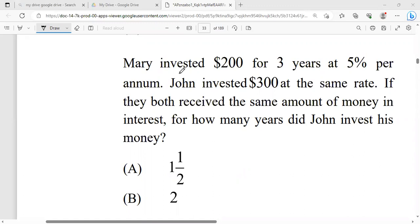So let's break it down. We're going to focus on Mary because we have all the information on Mary. Let's calculate the simple interest that Mary receives because they did say that she and John received the same amount of interest.